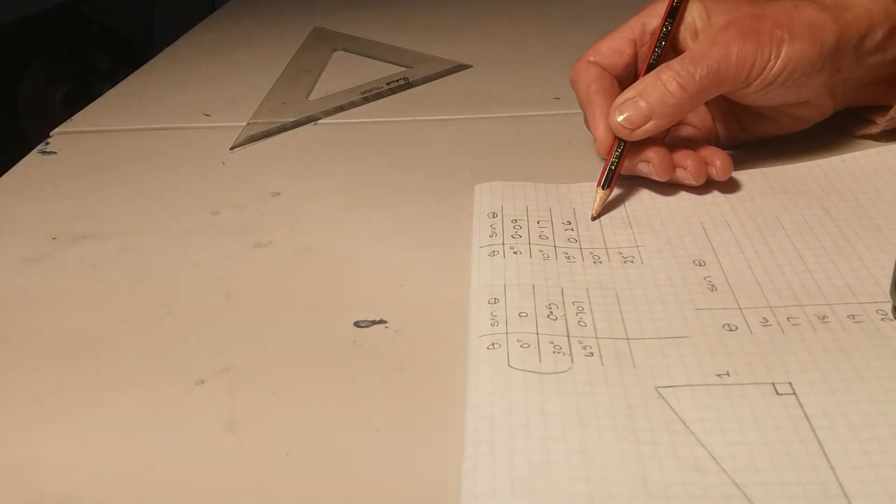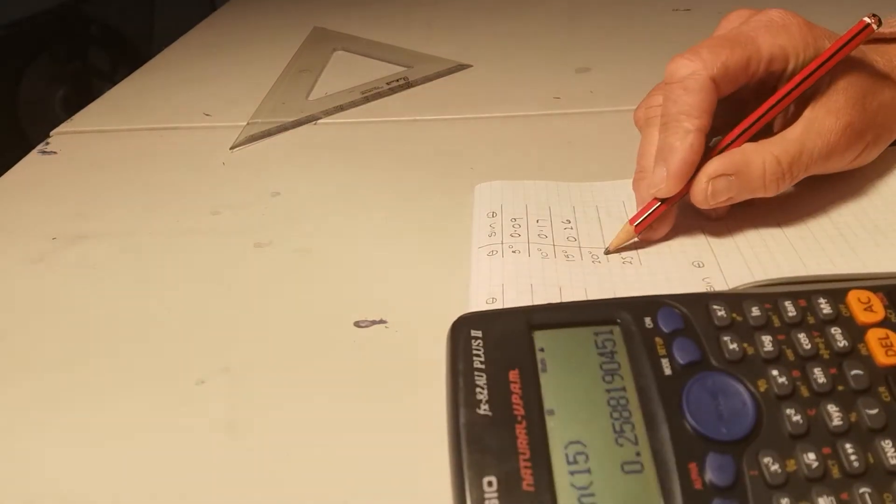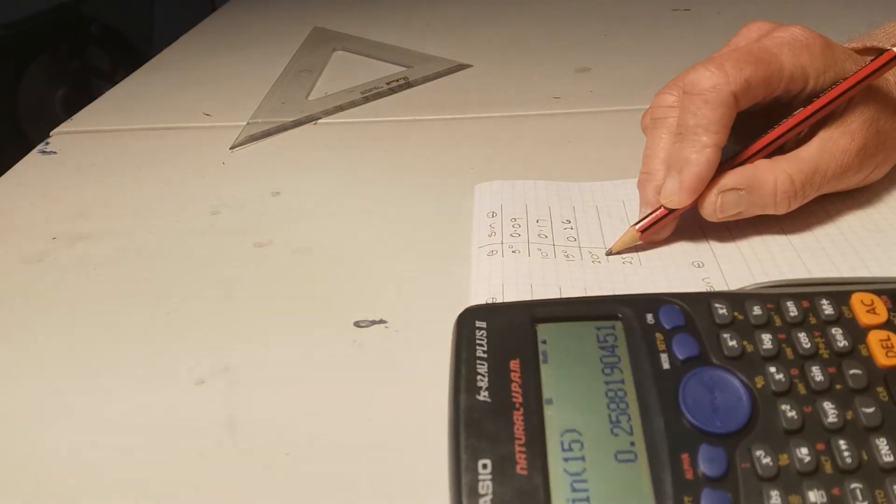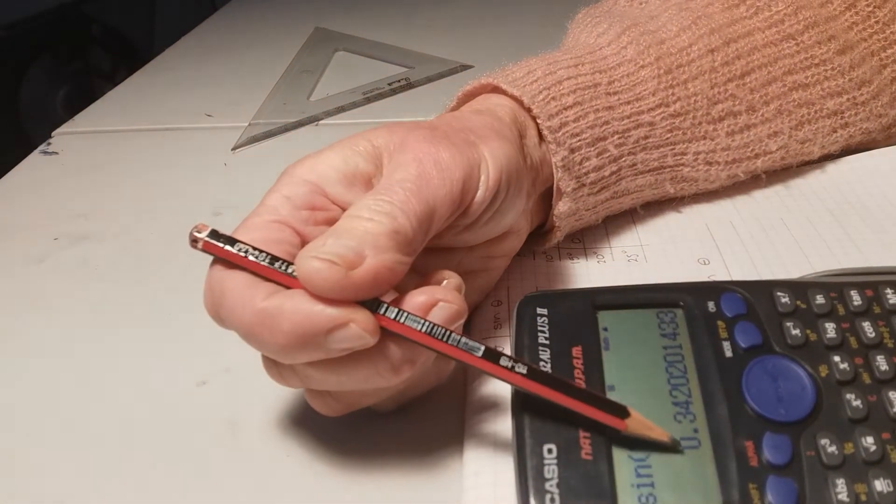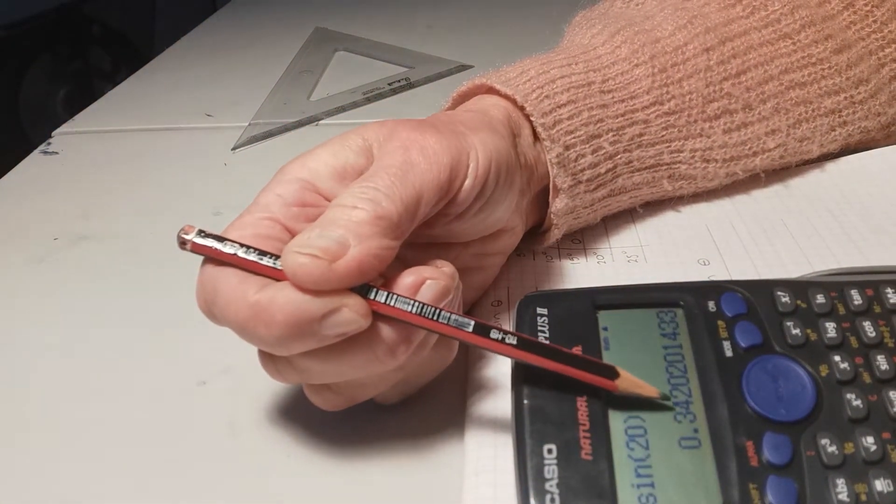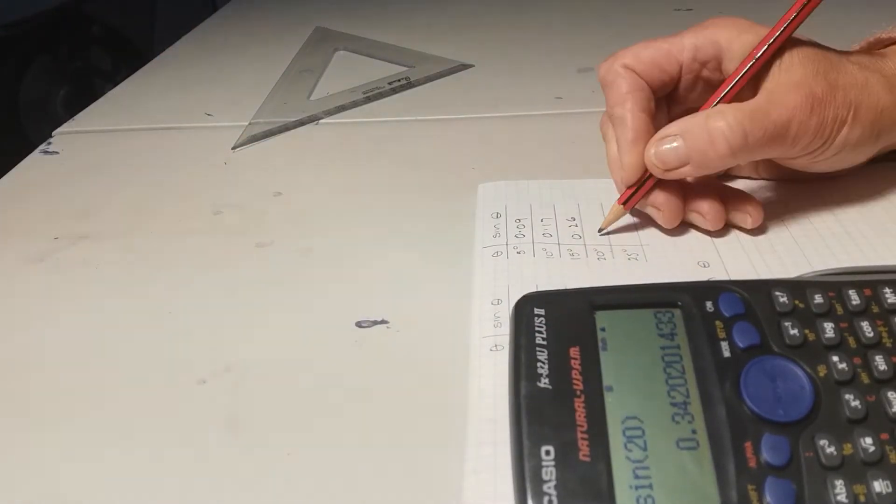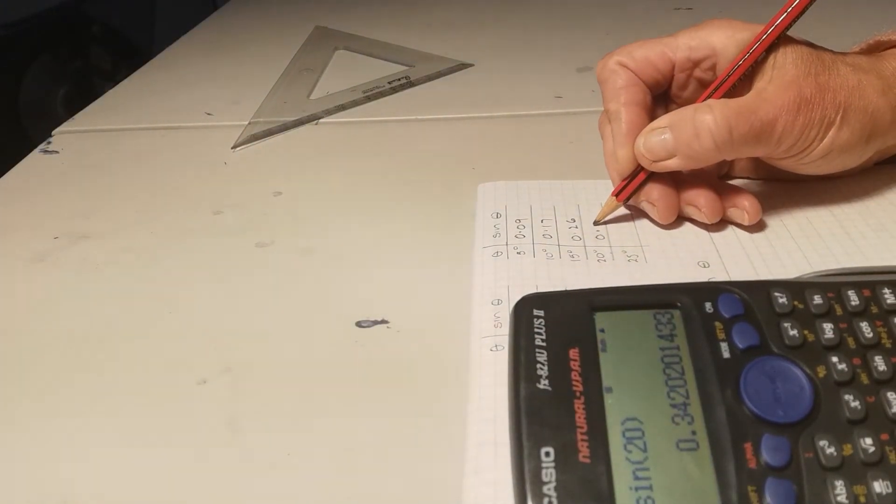So I'm just putting those values into my table. And let's try the next one, it's 20 degrees. Clear, sine of 20 degrees. We're getting very close now, is 0.34. Aha, well, that looks like we've gone over the value.